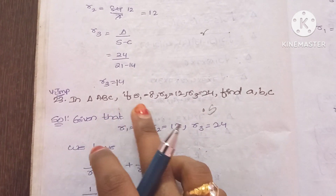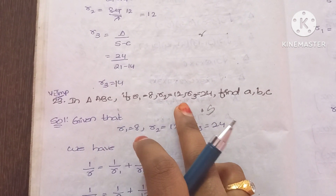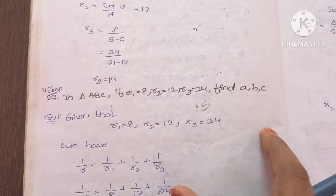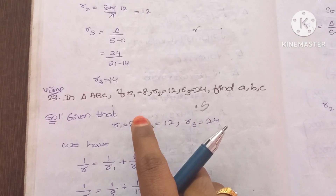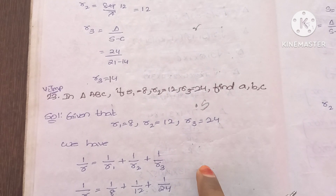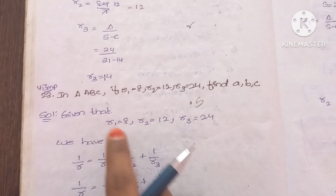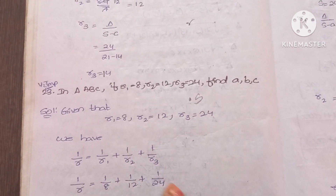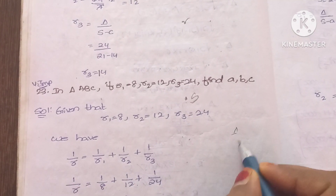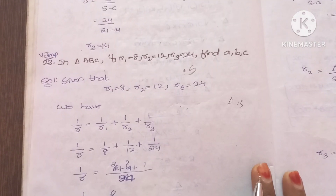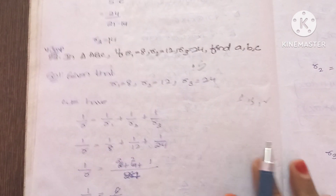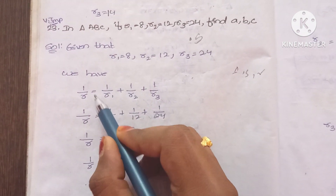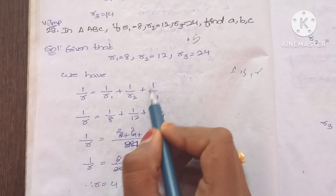Problem 3: In triangle ABC, if R1 = 8, R2 = 12, R3 = 24, find A, B, C. We use the formula 1/r = 1/R1 + 1/R2 + 1/R3 = 1/8 + 1/12 + 1/24. Taking LCM 24, this equals 3/24 + 2/24 + 1/24 = 6/24 = 1/4. So r = 4.